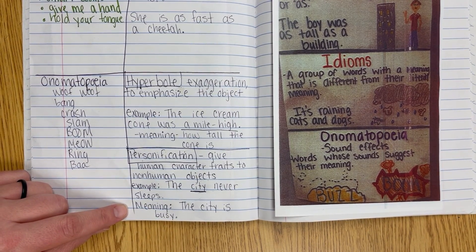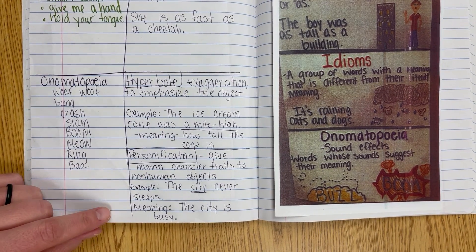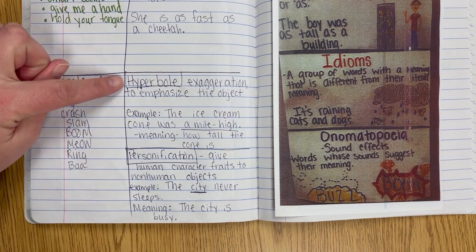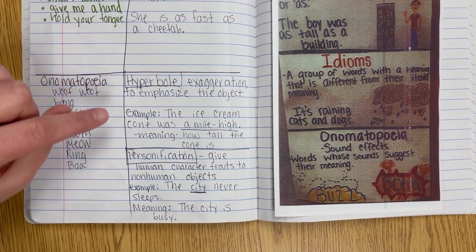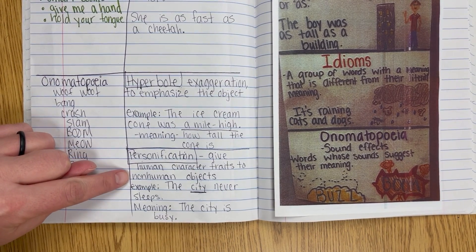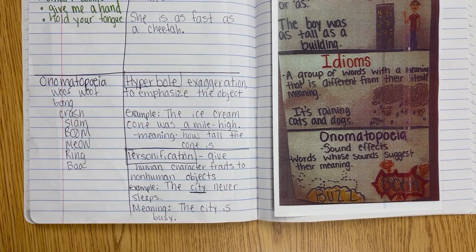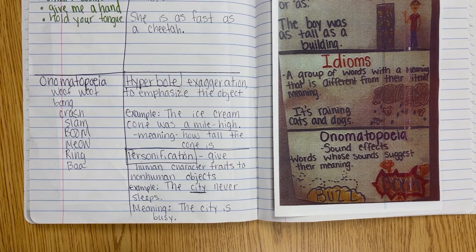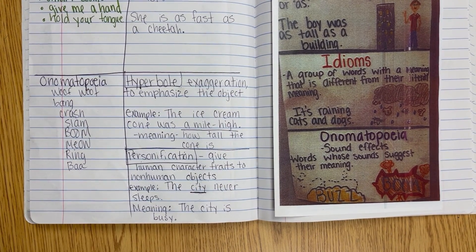But if you were to read that, you would know that they were moving, probably by the wind. So to reiterate: hyperbole is an exaggeration to emphasize the object; personification gives human character traits to a non-human object. You will watch two videos today about hyperbole and personification, and then you'll have an activity with those. Make sure you get your notes written down so you have these.